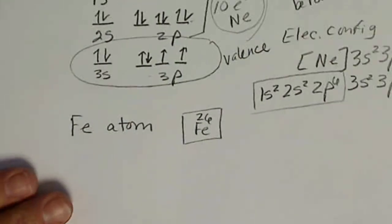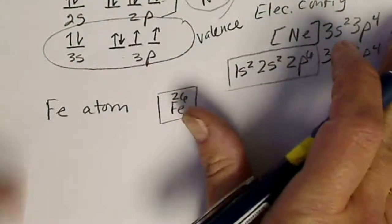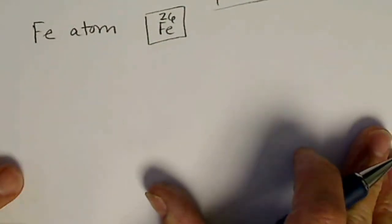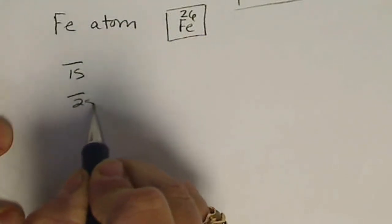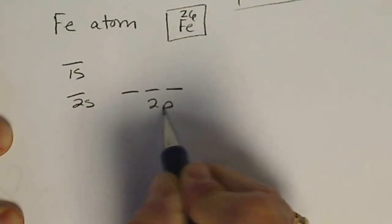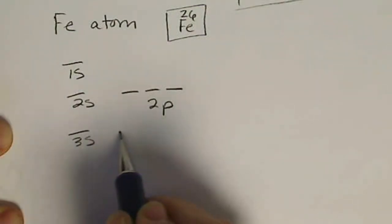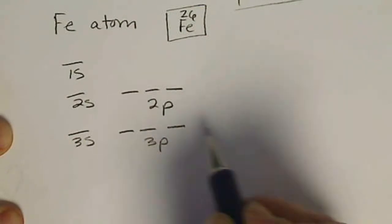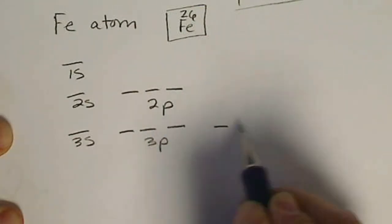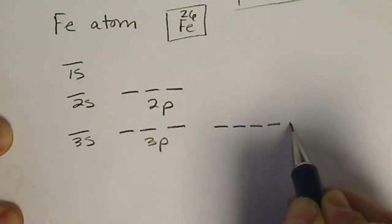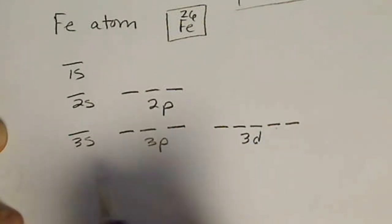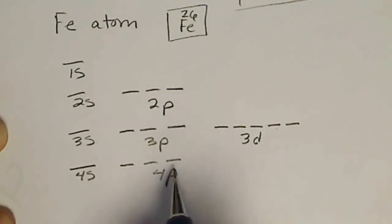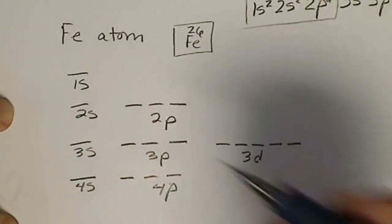For iron, we'll draw the orbital diagram: 1s, 2s, 2p (the p's occur in sets of 3), 3s, 3p. Once we're on the third level, we add the d orbitals, which occur in sets of 5. Then 4s and 4p. We're not going to need the 4p.